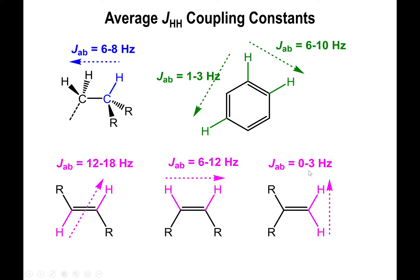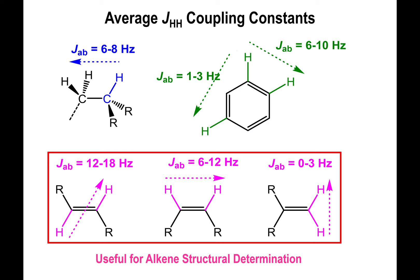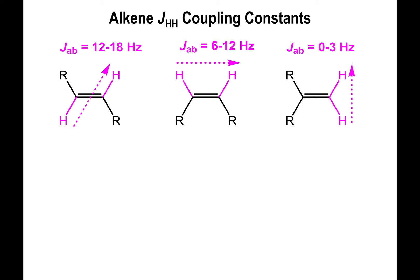The way you can explain this difference is by looking at the HOMO-LUMO interaction of these orbitals. If you consider the C-H bond as the lowest unoccupied molecular orbital, you have an anti-bonding orbital. Next to the C-H bond, you have the other C-H bond, which acts as the highest occupied molecular orbital. The HOMO is providing electron density to the LUMO. Because they are parallel to each other, the symmetry is perfect for that interaction, and since the symmetry is great, you have the highest J coupling constant.